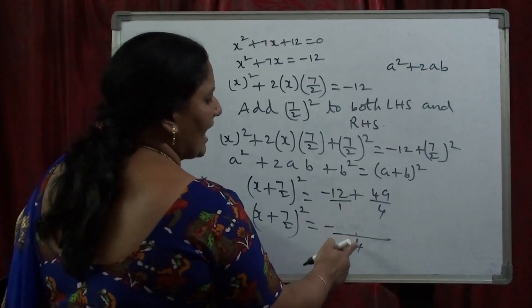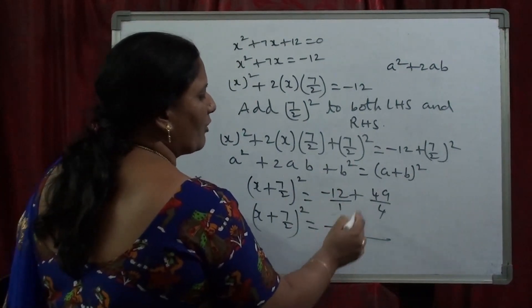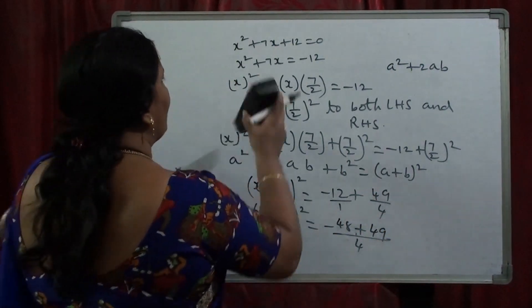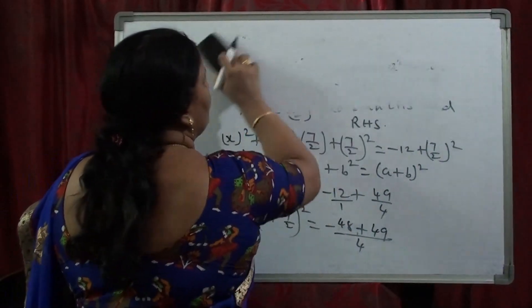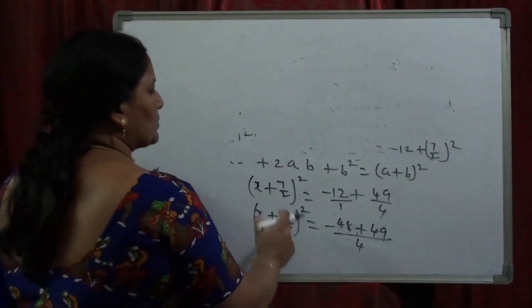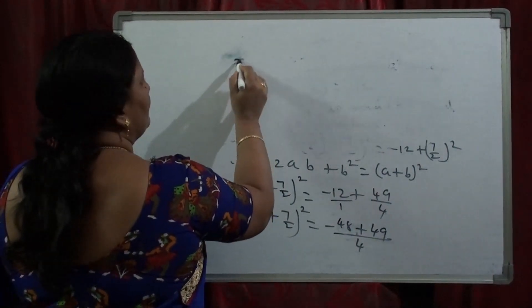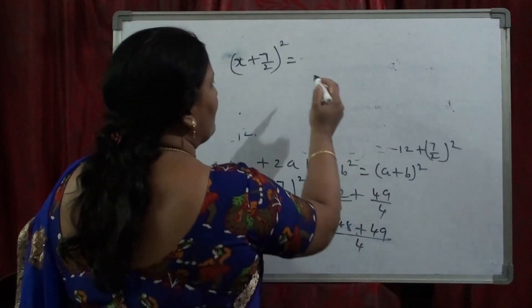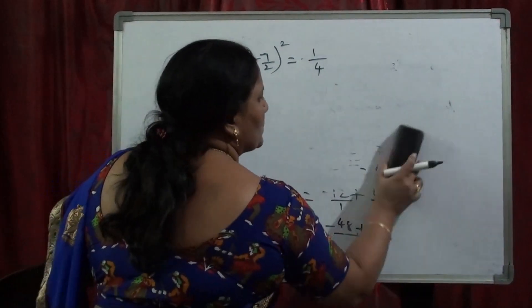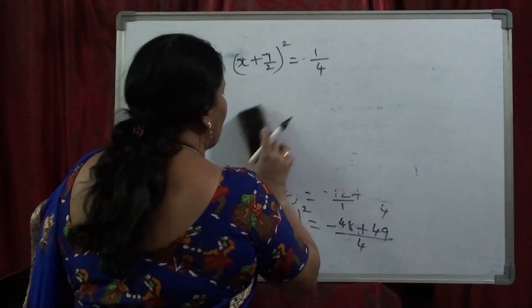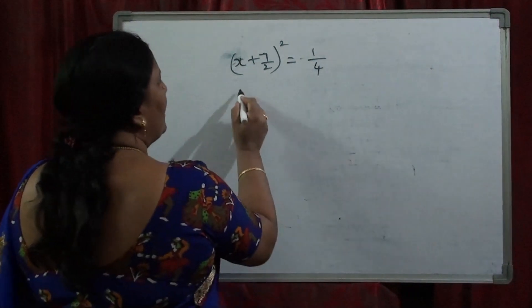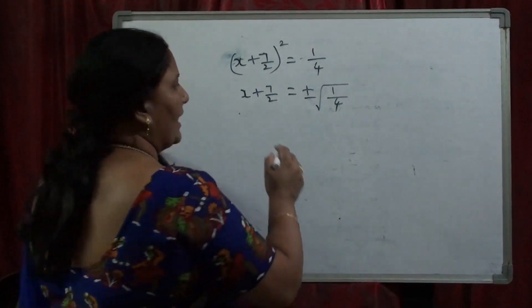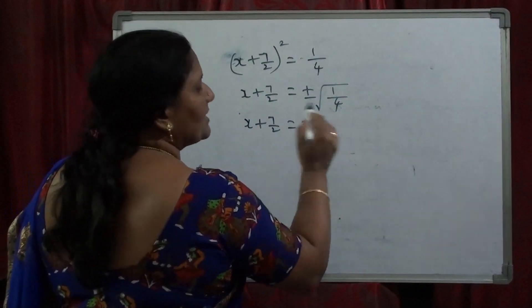The denominator 1 goes into 4 four times; 4 × 12 = 48. Plus, 4 goes into 4 one time; 1 × 49 = 49. So (x + 7/2)² = (−48 + 49)/4 = 1/4. Sending the square to RHS, it becomes x + 7/2 = ±√(1/4), which gives x + 7/2 = ±1/2.